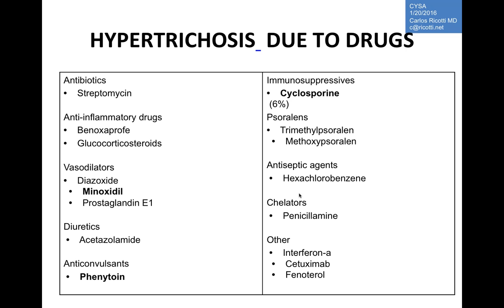Hypertrichosis is also seen with other drugs including streptomycin, steroids, minoxidil, acetazolamide, phenytoin, and others. EGFR receptor inhibitors such as cetuximab are now more frequently associated with trichomegaly as well as hypertrichosis.